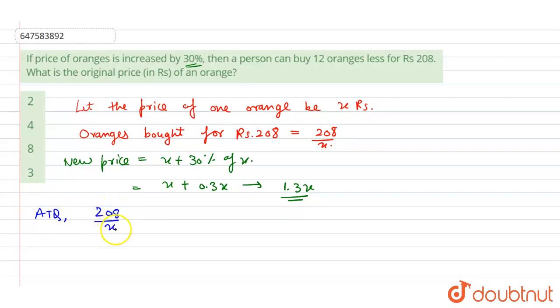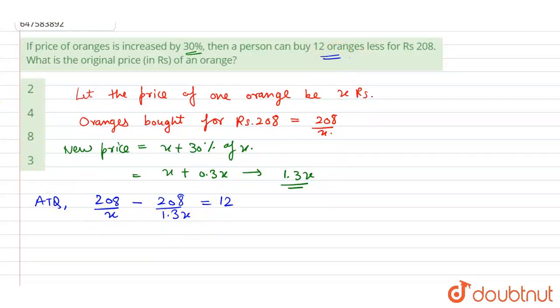208 by X, that is oranges bought for rupees 208, minus 208 by 1.3X, that is the new price, equals 12. This gives us 208 minus 160 equals 12X, so 12X equals 48.